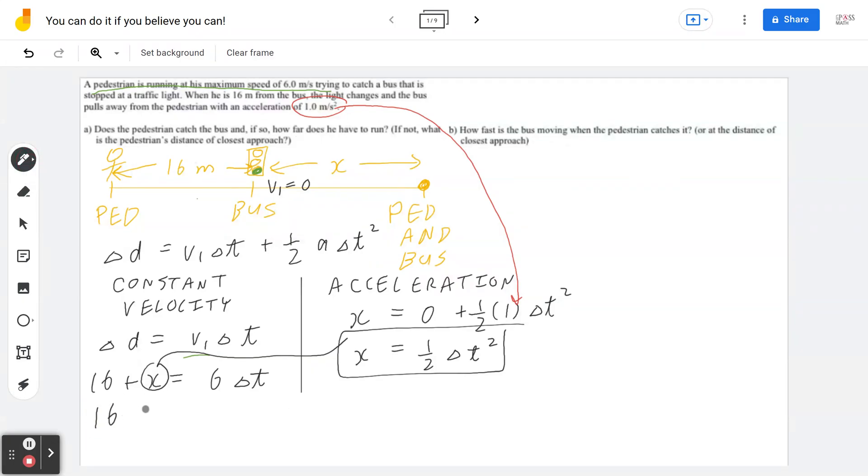So now you can say 16 plus half times t square equals to 6 times t. And of course, you can multiply everything by 2. When you multiply everything by 2, that's going to be 32, which equals to... I should say 32 plus t square equals to 12t. If you bring it to one side, what happens is you have t square minus 12t plus 32 equal to 0.